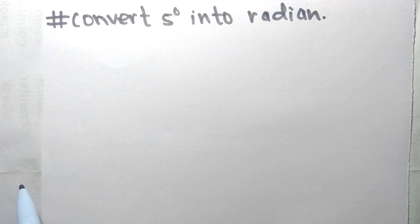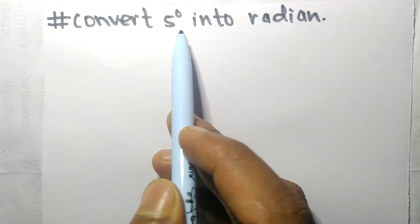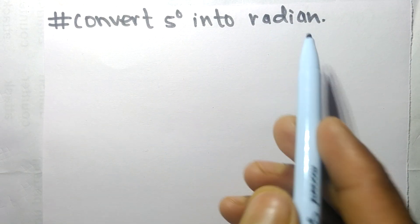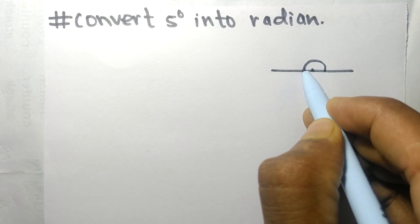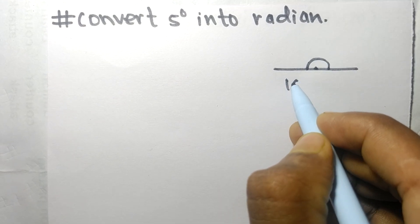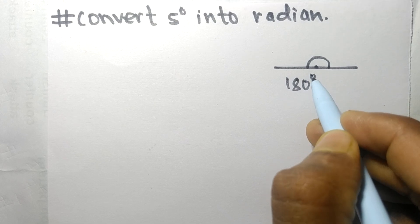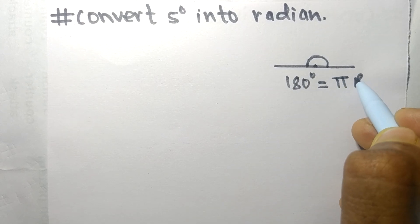So today in this video we shall learn to convert 5 degrees into radians. We all know in a straight line or in a half circle, the sum of angles is 180 degrees, and it is equal to π radians.